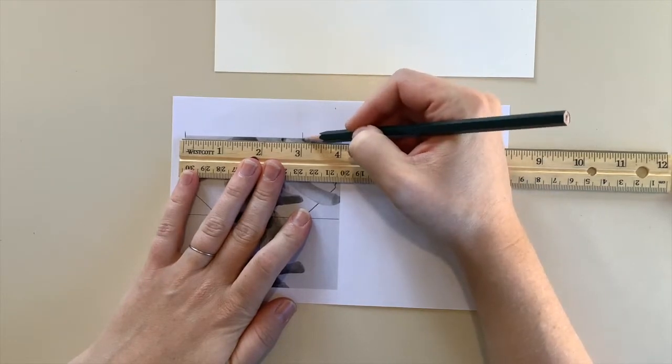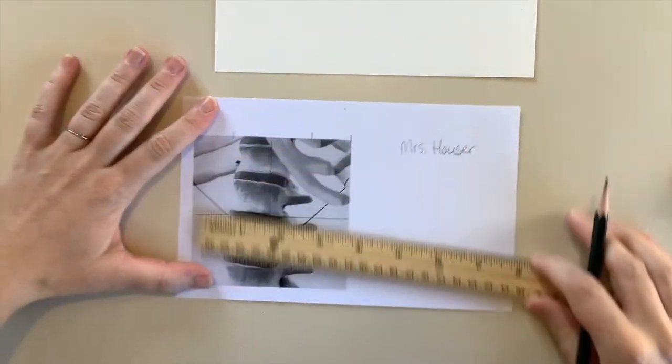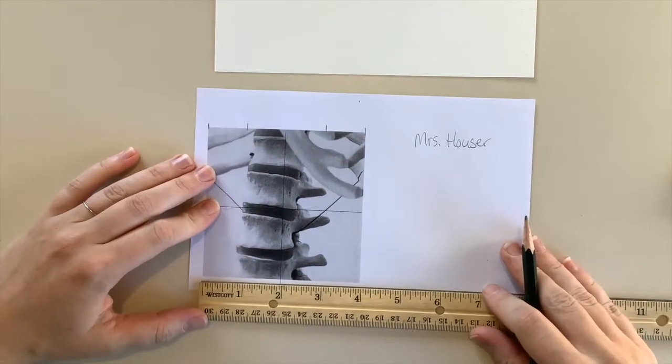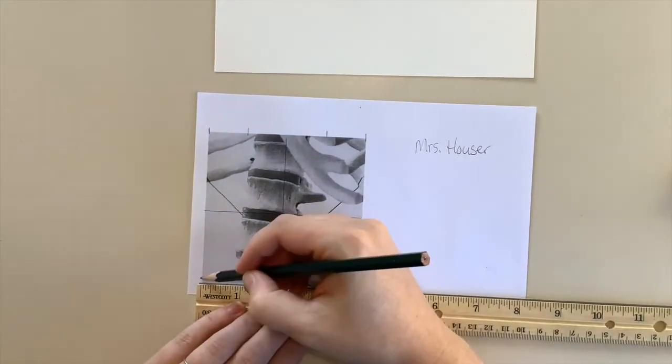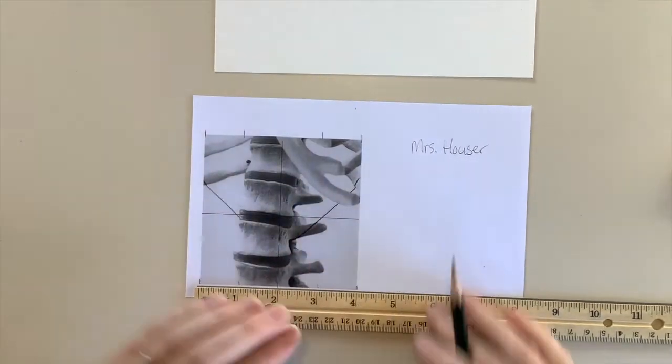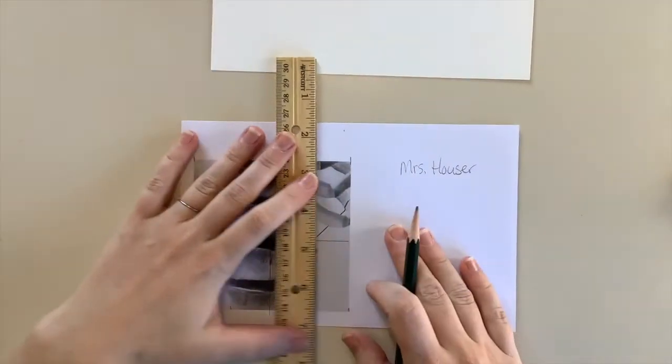I'm marking it 0 and 4, and then I'm also going to add in 1 and 3 so that I have a 1-inch grid going all the way across. I'm going to move my ruler down now and line up the 0 on the same side that I did the first time so that I can keep it accurate. So I'm marking at the 0, the 4, the 1, and the 3. That way I have a 1-inch grid going all the way across.